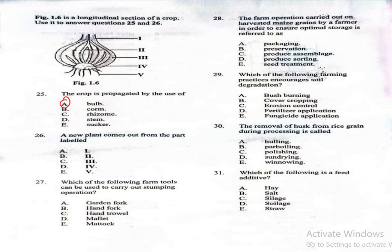Question 26 says, a new plant comes out from the part labeled what? The right answer is option E, which is V. Part V represents the root base plate from where new shoots emerge to grow into a new plant.